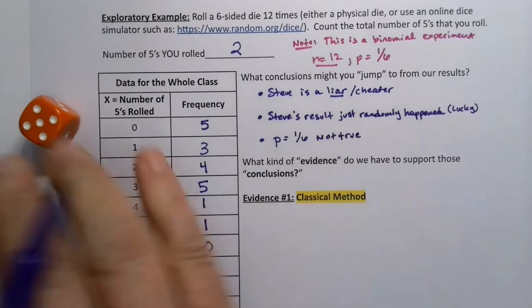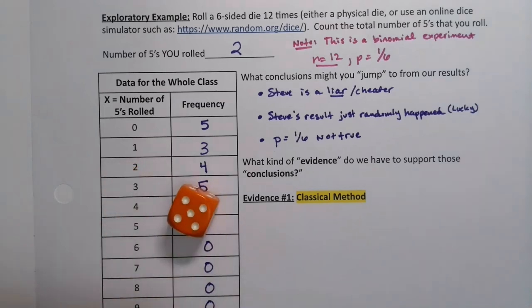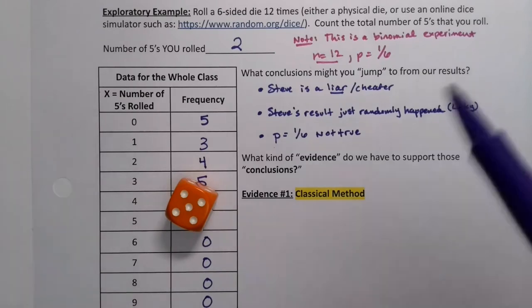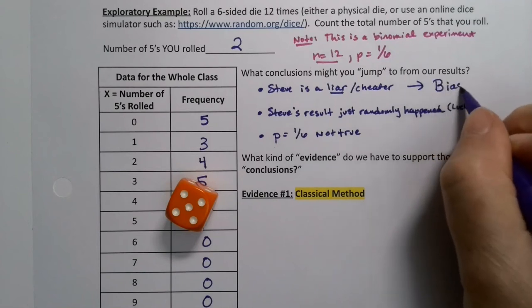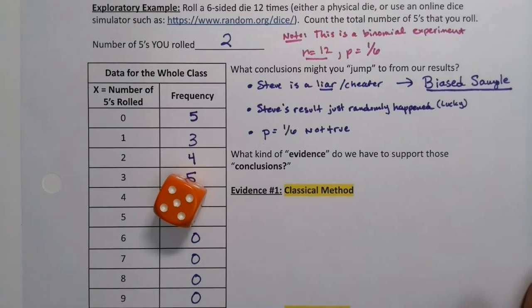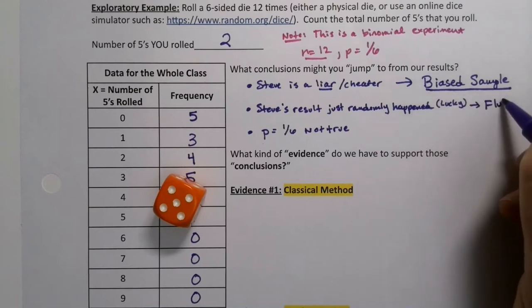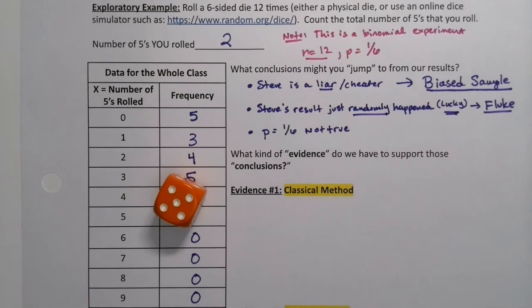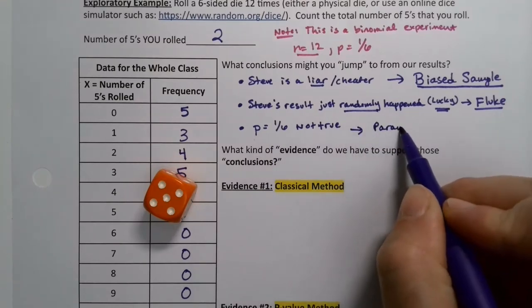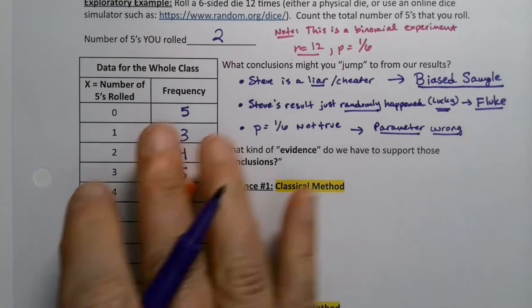Or the other option is that the probability that we assumed was not true. I mean, when you think about these dice rollers, you're just assuming 1/6 of the time it'll be a 5. But that's not always the case. Now, if these categories are looking familiar to you, that's because you've learned them before. This one would be a biased sample. If he's going to cheat or lie, then his results are biased, because he was not trustworthy to begin with. This lucky fluke, by random chance it just happened. That's a fluke. Is this happening familiar from Chapter 8? Yes. Or the parameter that we assumed is wrong. Those are the three options.